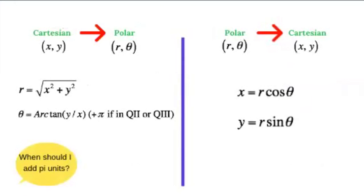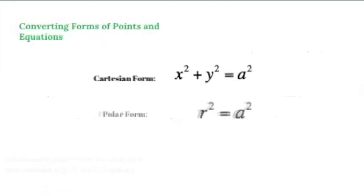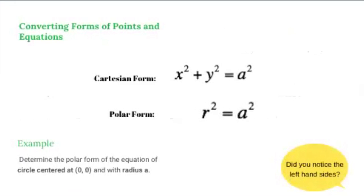We have the following formulas for converting points in Cartesian to polar coordinates and vice versa. Again, notice that when using the arctan function, π must be added to get the actual value of theta if the point lands on quadrant 2 or quadrant 3. Let's try converting the Cartesian form of the equation of a circle centered at the origin with radius a units. From the formula, r² = x² + y², so the polar form of the circle is r² = a². Doesn't it look simpler having a single variable r?